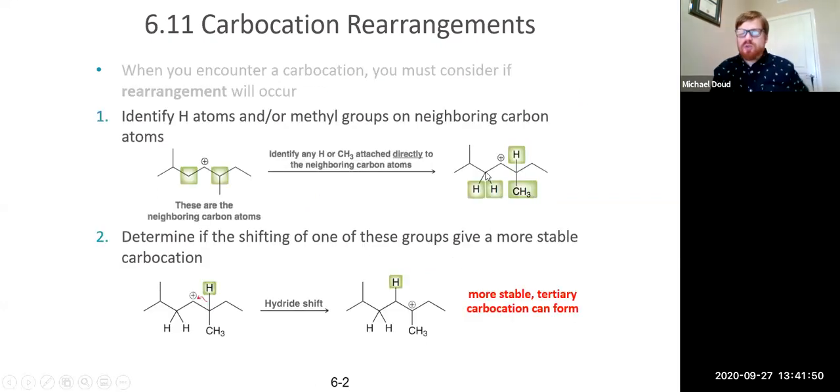So that just shows you through the process. This is a step-by-step list of what I exactly just did here. Just identify the hydrogens and methyl groups that are on the neighboring carbon atoms, and then determine if you shifted one of them, would it give you a more stable carbocation? And sure enough, in this case, we had a hydride shift, and that's what occurred.